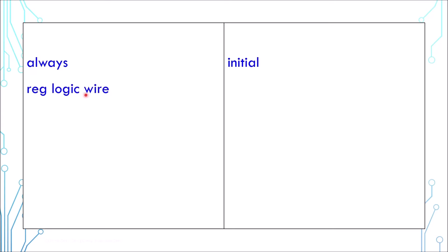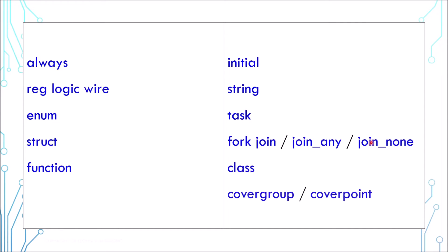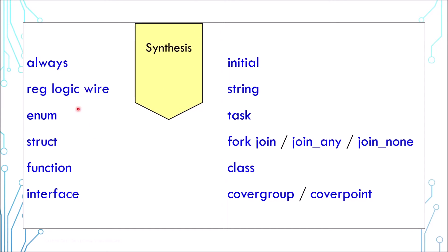This is a very interesting point to do a recap. If you follow the series, we've discussed about always block and initial block, we've talked about reg, wire, and logic, and then some data types such as enum, struct, and string. We've talked about function and task, and then fork-join, join-any, and join-none, and then there is class, covergroup, and coverpoint, and most recently we've talked about interface.